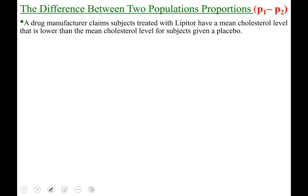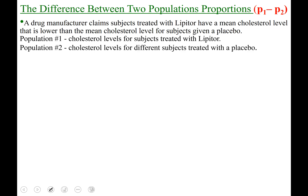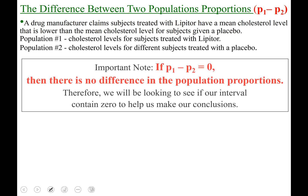Some examples would be a drug manufacturer claims that subjects treated with Lipitor have a mean cholesterol level that is lower than the mean cholesterol level for subjects given a placebo. That would be two populations: population one, cholesterol levels for subjects with Lipitor, and population two, cholesterol levels for subjects treated with a placebo. It's important to note that if p sub 1 minus p sub 2 equals 0, that means their difference is nothing — there is no difference in the population proportions.